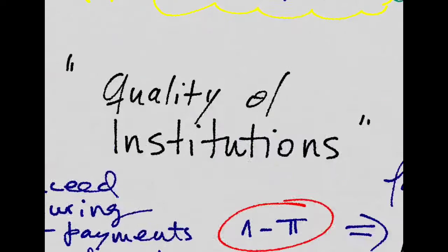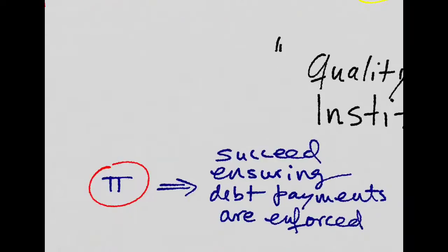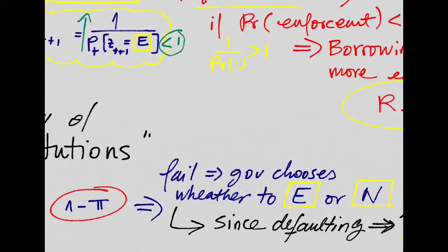And this is where the quality of the institutions of the country that is borrowing starts to matter. Imagine that with probability pi, institutions are good and always succeed in making debts paid back. And with probability 1 minus pi, these institutions fail and governments are free to choose whether they want to enforce or not enforce.